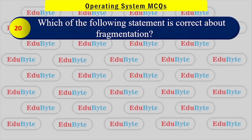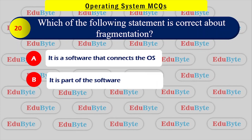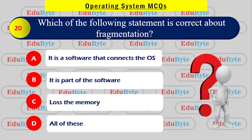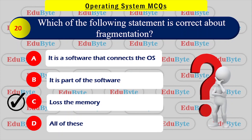Which of the following statements is correct about fragmentation? Options include: it is software that connects memory, it is part of software that loses memory. The correct answer is that fragmentation results in lost memory. A more detailed explanation will be provided in the next video.